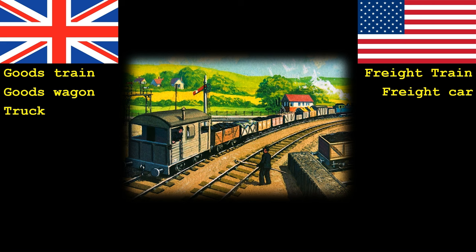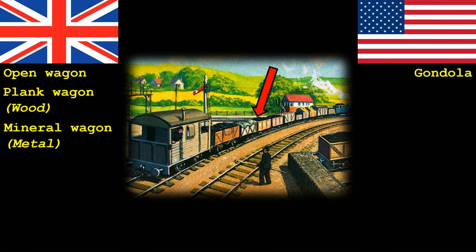There are many different types of goods wagons or freight cars. Perhaps one of the most common ones in the early days of the railway were open wagons, used to transport a wide variety of different types of cargo. In the UK these are simply known as open wagons. If made of wood they were usually referred to as a 3, 5 or 7 plank wagon depending on how tall they were. Metal wagons designed for heavier items such as coal, stone and minerals were normally known as mineral wagons. Interestingly in America this particular type of freight car is known as a gondola.